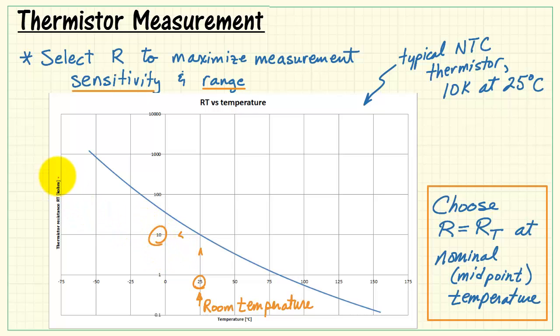the thermistor has a resistance at 25 degrees of 10 kilo ohms. That means we should choose the fixed value resistance to also be 10k.